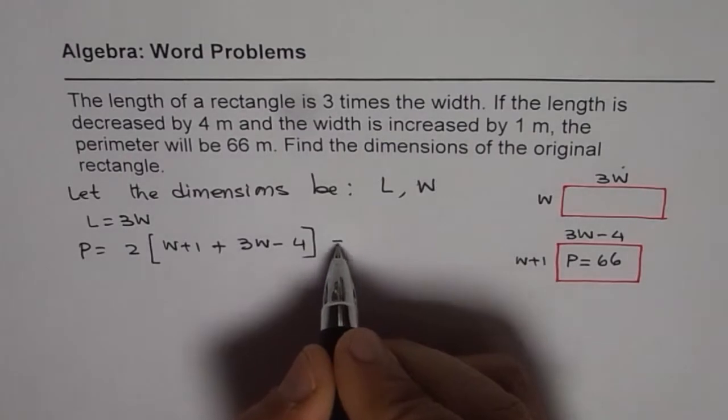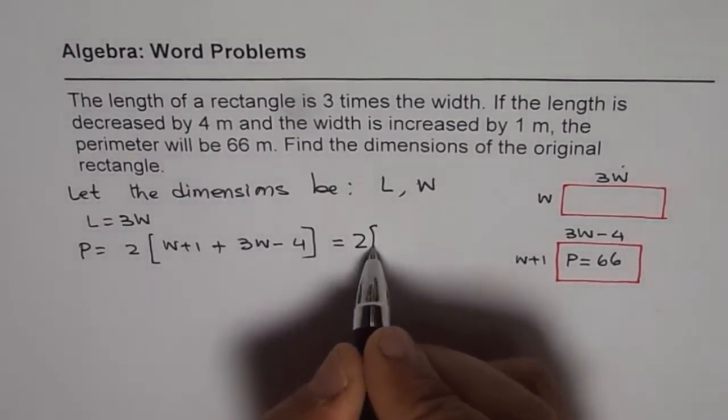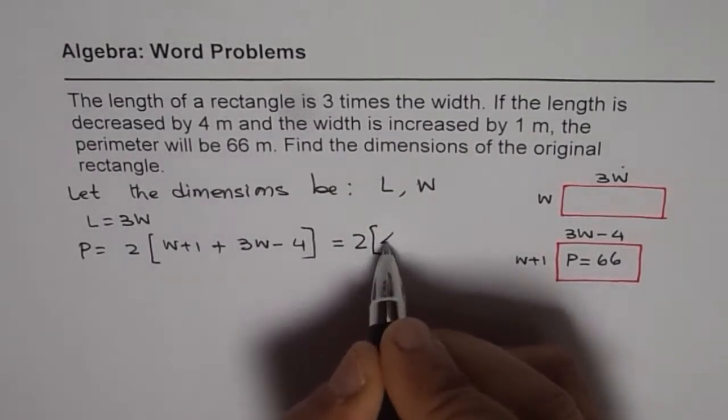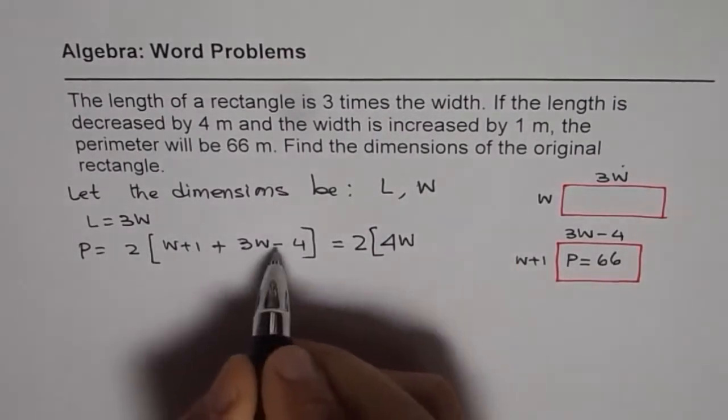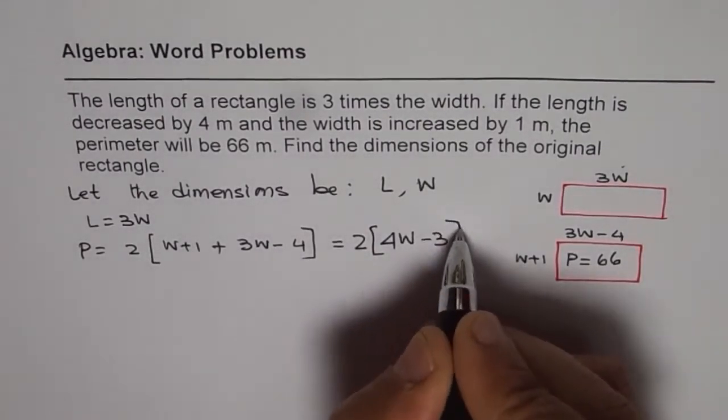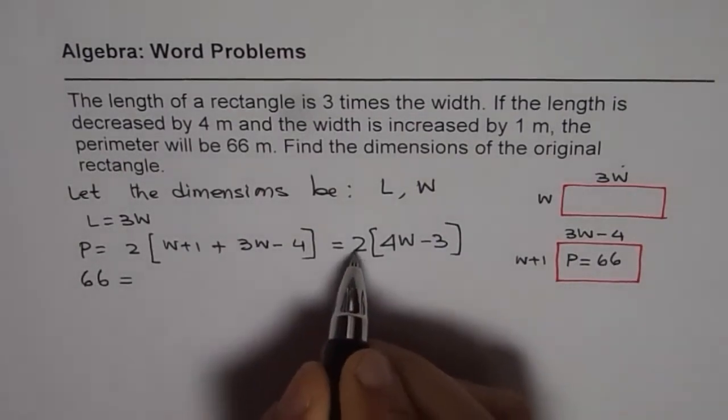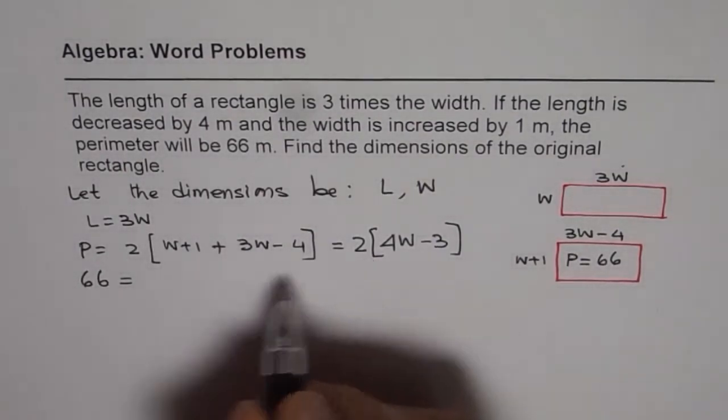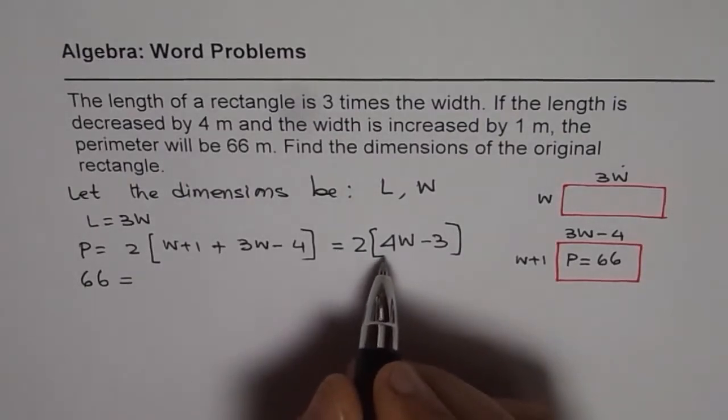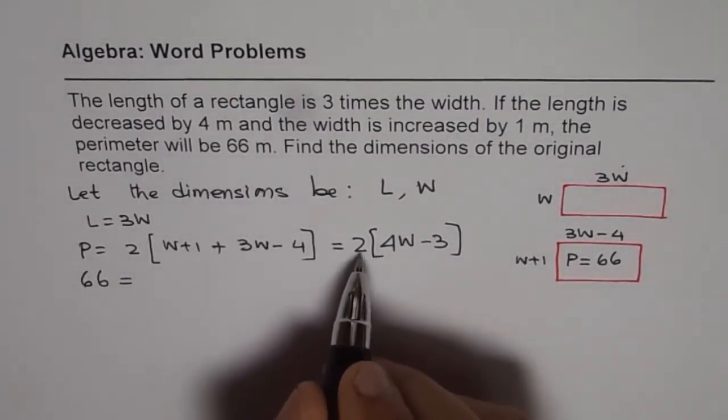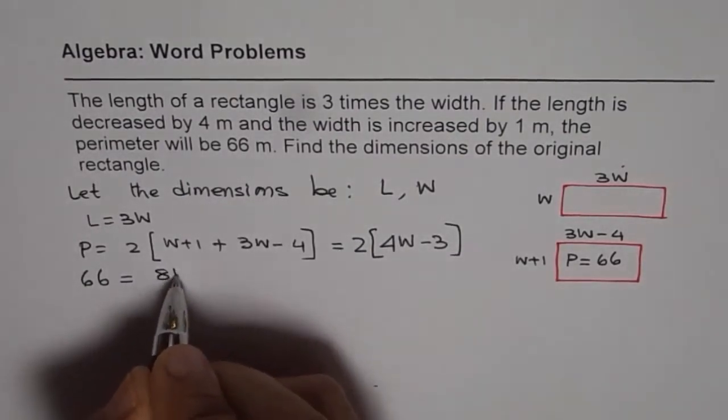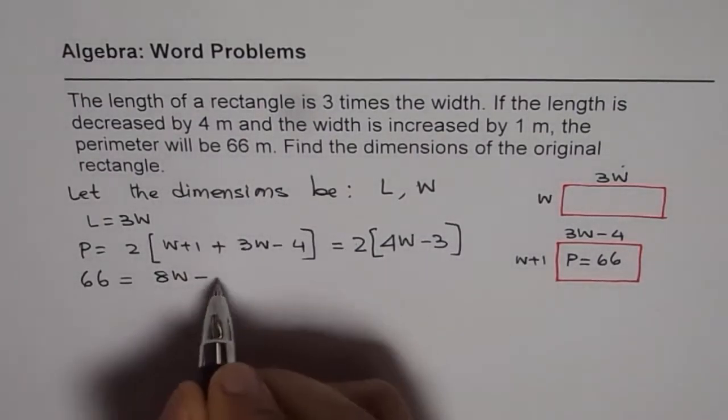So let me expand this and simplify. We have W plus 3W as 4W. One minus four is minus three. Perimeter is 66. And two times, or we could divide by two, but now let me expand. So 8W minus two times three is six.